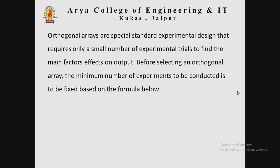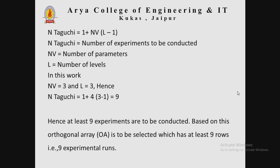Orthogonal arrays are special standard experimental designs that require only a small number of experimental trials to find the main factor effect on output. Before selecting an orthogonal array, the minimum number of experiments to be conducted is fixed using the formula: N_Taguchi = 1 + N_v × (L − 1), where N_Taguchi is the number of experiments, N_v is the number of parameters, and L is the number of levels.